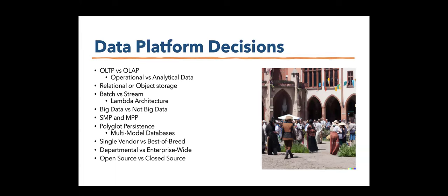Batch versus stream — I mentioned Lambda architecture. Big data versus not big data — there are distinct differences. It mostly has to do with the speed at which big data accumulates. As we sit here, there's big data accumulating in your company right now. We used to be able to ignore it — it was operational and did its job. But we really can't do that anymore if we want to be competitive. The 'not big' data is probably still more important if you haven't brought it to a certain level of maturity.